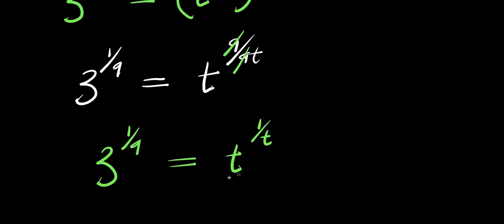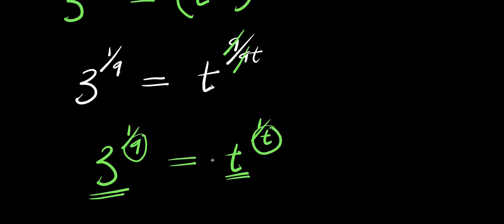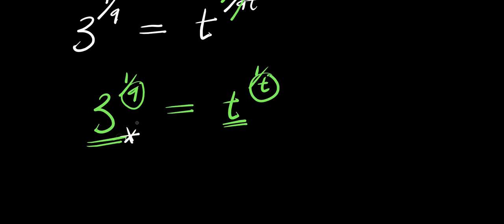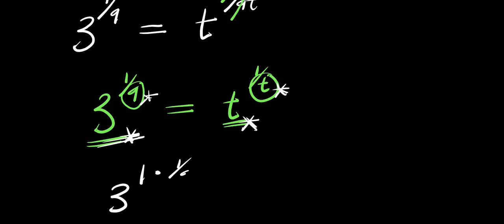Now if you observe very well, there is t here at the base and there is t here in the exponent, and we only have 1 here. Now this is 3 at this base and there is 9 here. So for us to solve this further, we need to ensure that the base here is the same as what we have here so that it will align with the fact that the t is just the same. For us to achieve this, we can make use of the concept of equivalent fractions. For instance, I can rewrite this as 3 to the power of 1 times 1 over 9, and this equals t to the power of 1 over t.